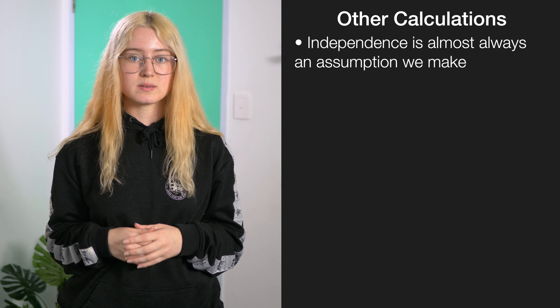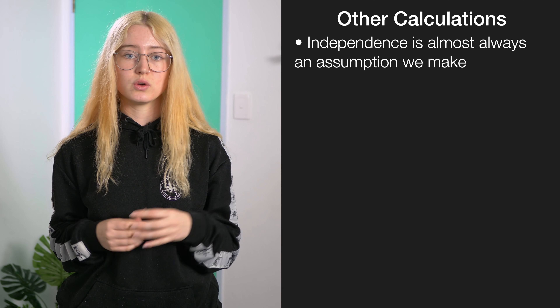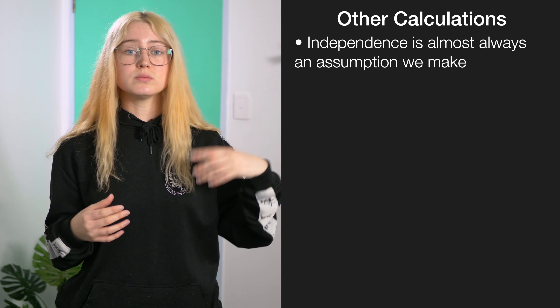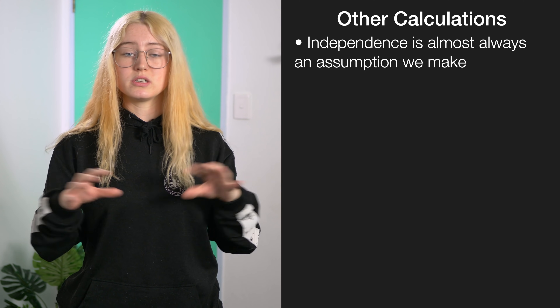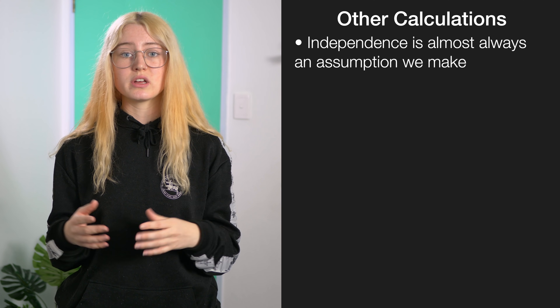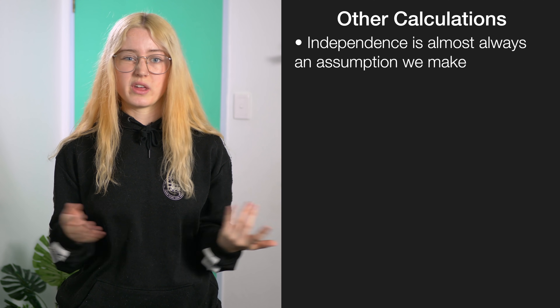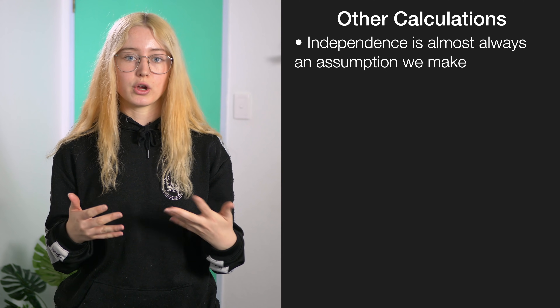When justifying your probability calculations you have to state the assumptions you used. The key one you almost always need to state is independence — for example, saying 'I assumed A and B were independent of each other, so I was able to calculate them together without any overlap occurring.'